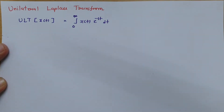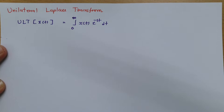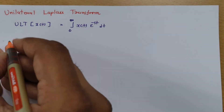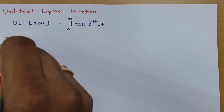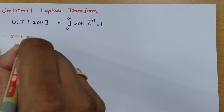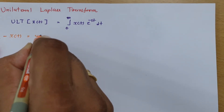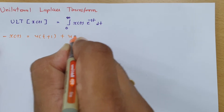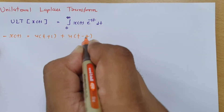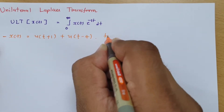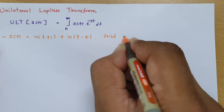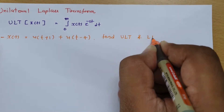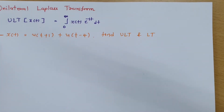To understand this better, let us work through an example. We have x(t) given by u(t+1) plus u(t-4). The question is: find the unilateral Laplace transform and the Laplace transform for this signal.